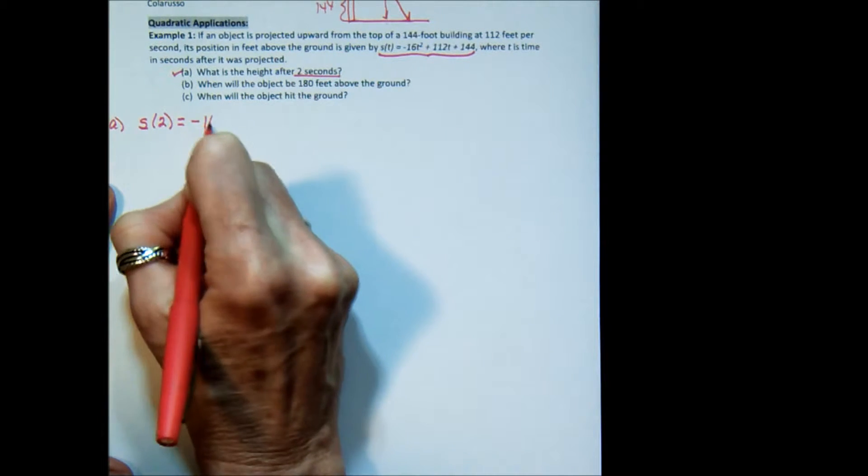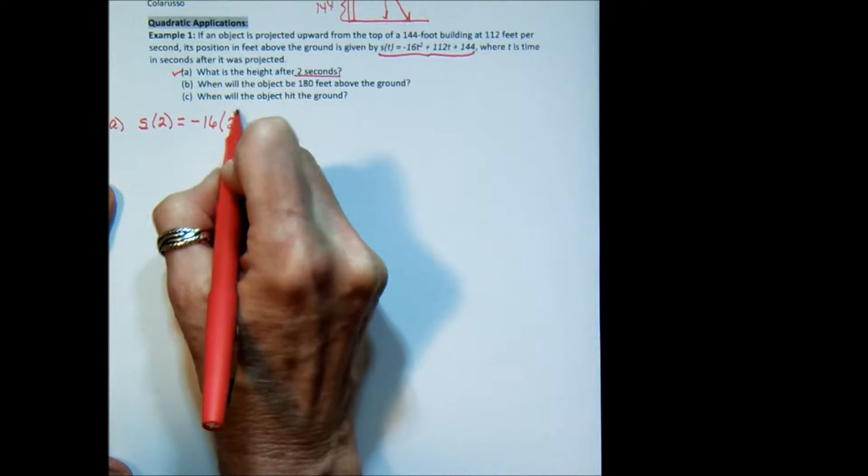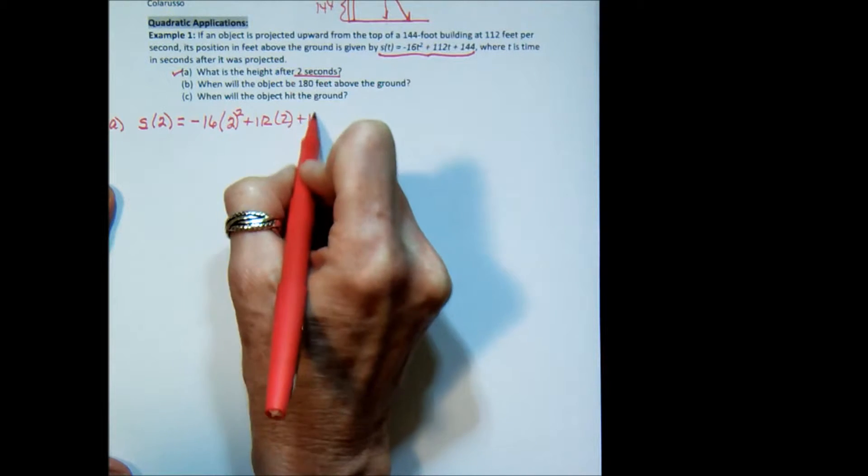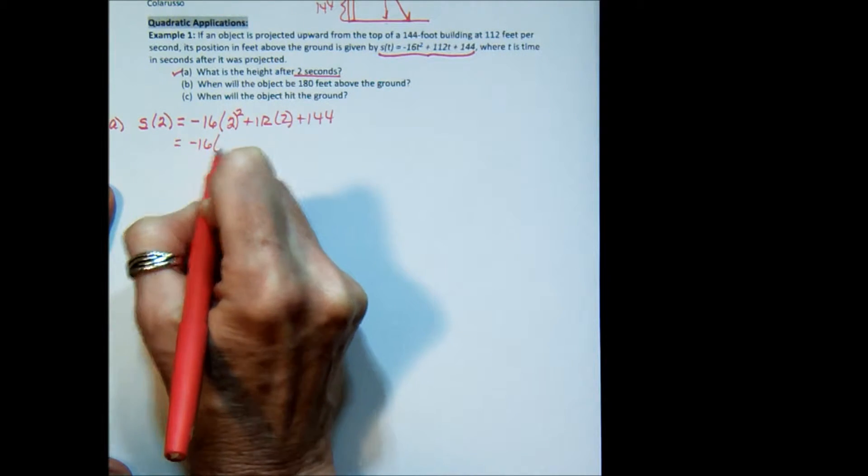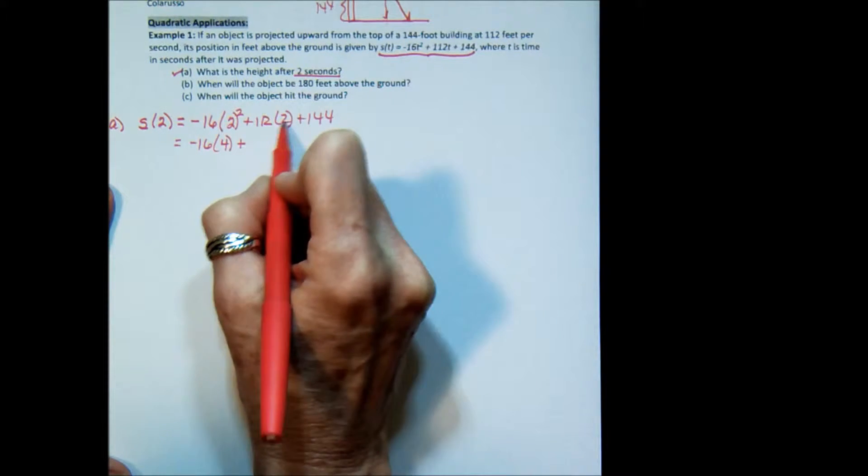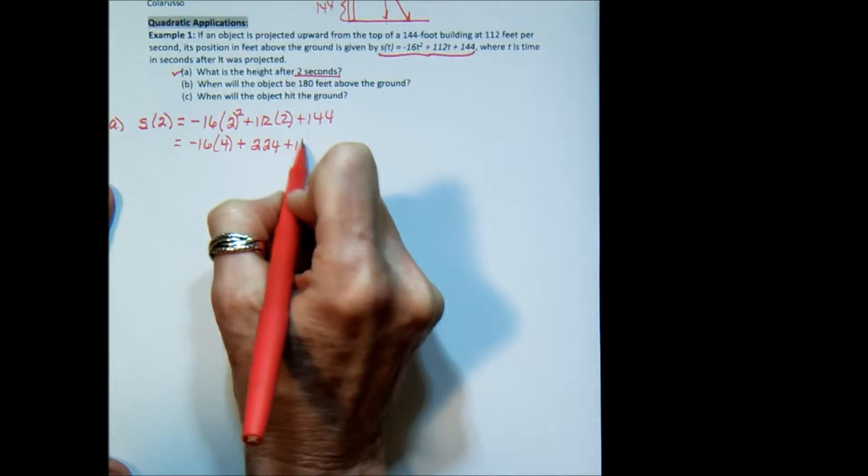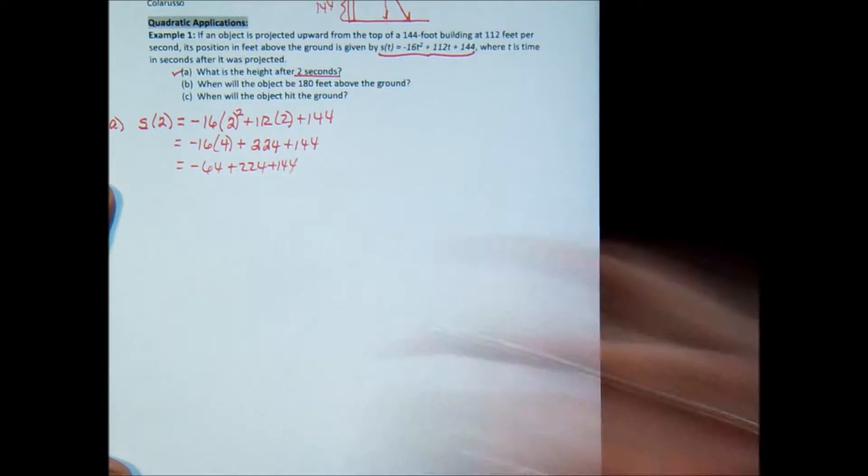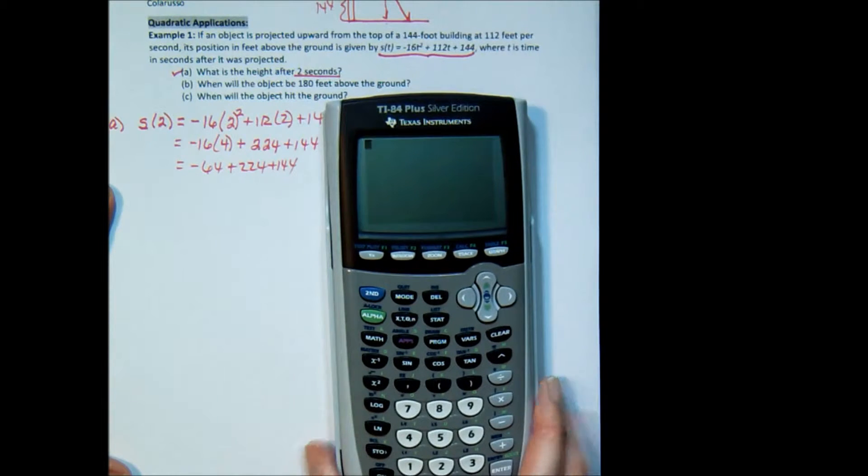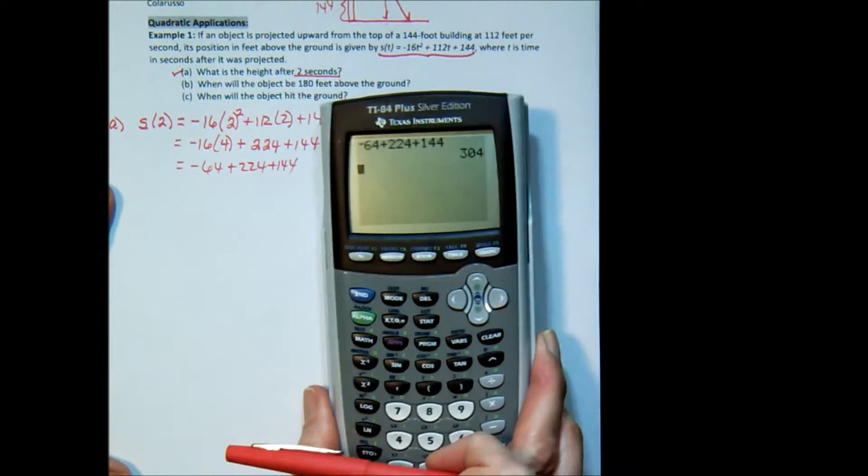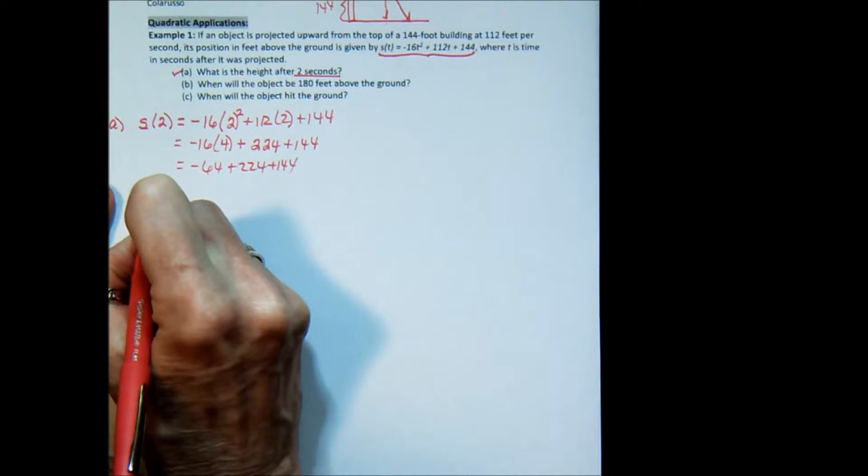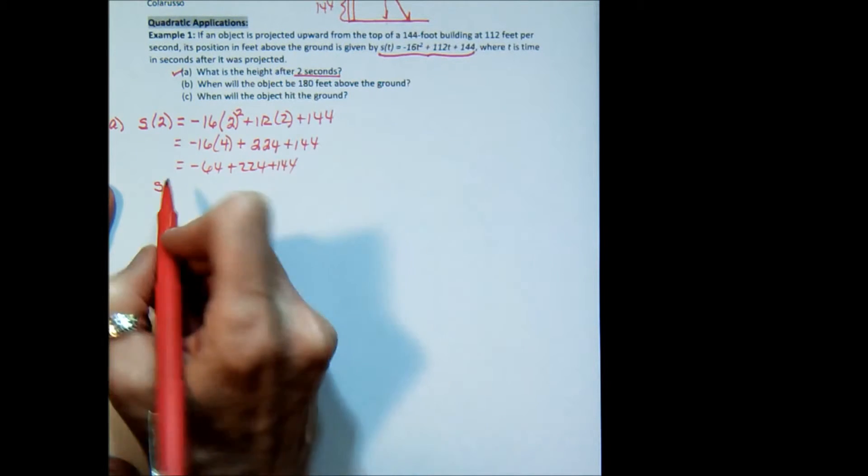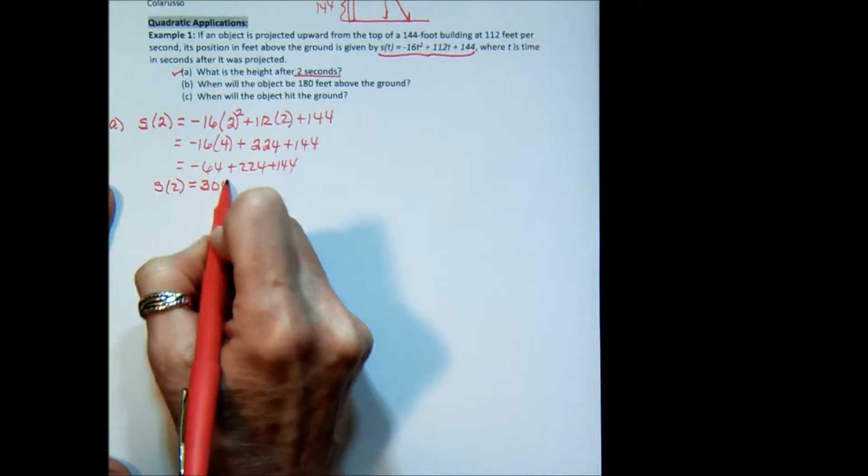Which means all I have to do is fill the 2 in for the time, since this is given as time. So it's going to be negative 16 times 2 squared plus 112 times 2 plus 144. Or negative 16 times 4 plus 2 times 112 is 224 plus 144. Negative 64 plus 224 plus 144. So if I grab a calculator and I say negative 64 plus 224 plus 144, you can see that we get 304 feet.